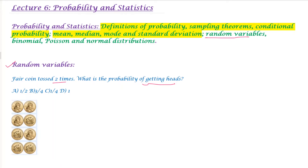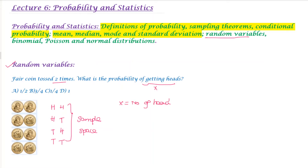For example, getting heads — we will define x as the number of heads. The sample space contains: head-head, tail-tail, head-tail, and tail-head. So x equals 0 means no heads, x equals 1 means one head, and x equals 2 means two heads.